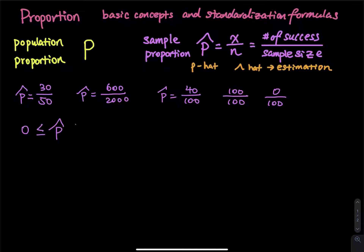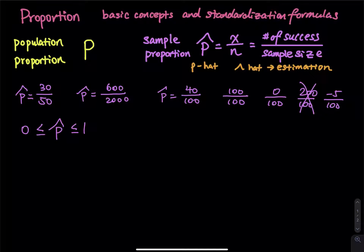The maximum sample proportion is 1 and the minimum is 0. You cannot have 100 students in a class and 200 of them drink coffee every day, and you cannot have negative 5 of them drink coffee — that doesn't make sense. The minimum is 0 divided by the sample size, and the maximum is the sample size divided by itself, which equals 1.